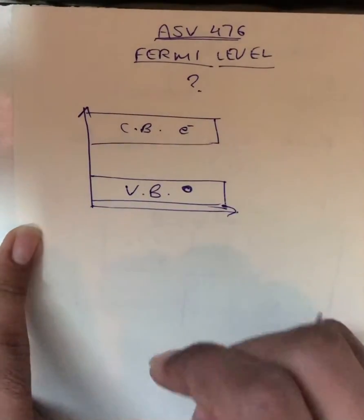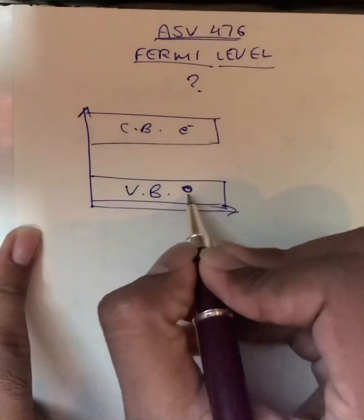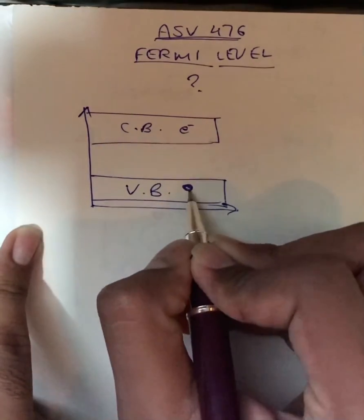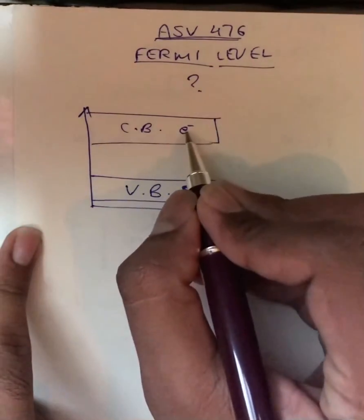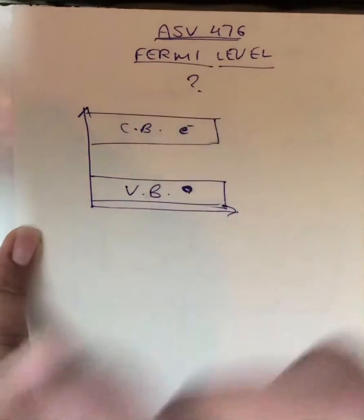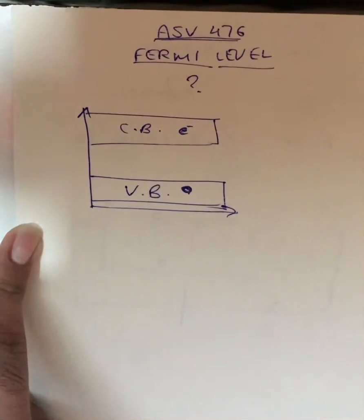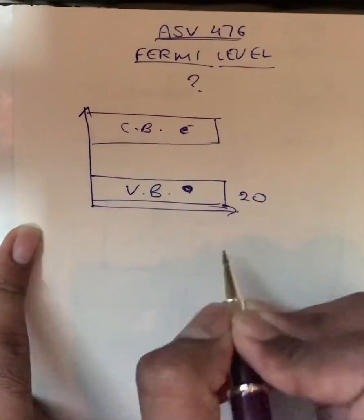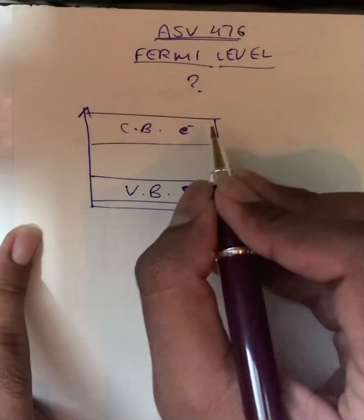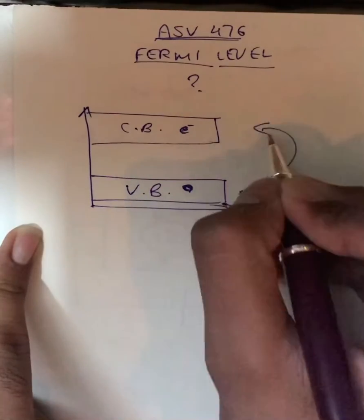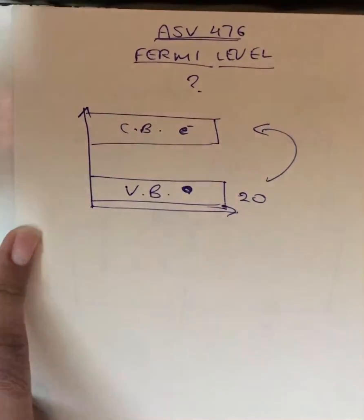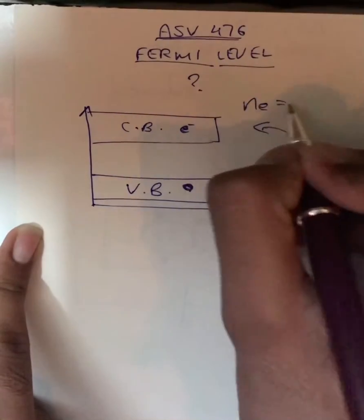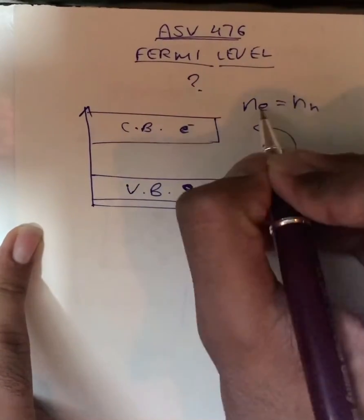Now in intrinsic semiconductor, the number of holes created will be equal to the number of electrons passed into the conduction band. So suppose if there are 20 holes created, which means that 20 electrons are excited into the conduction band. So the number of holes and number of electrons is equal.